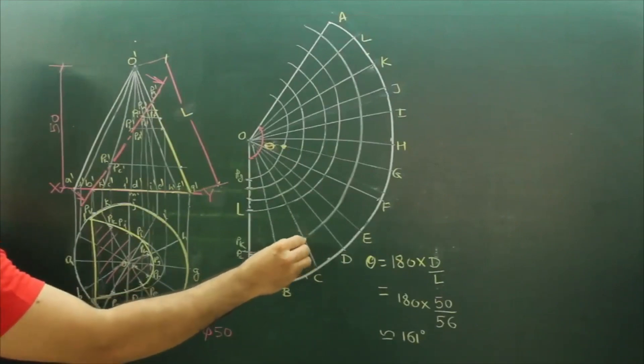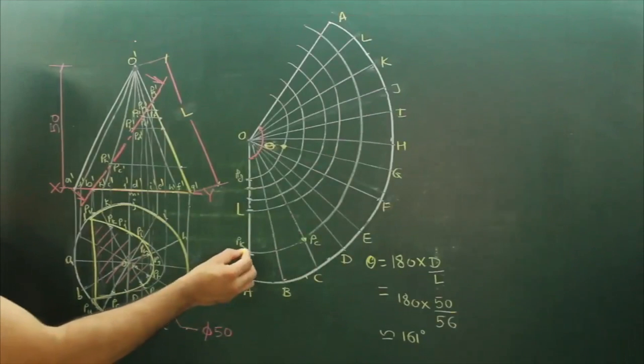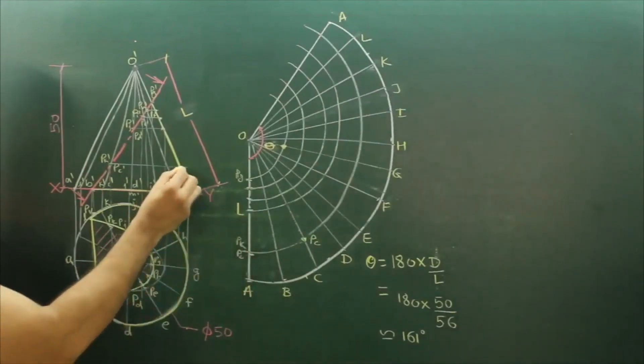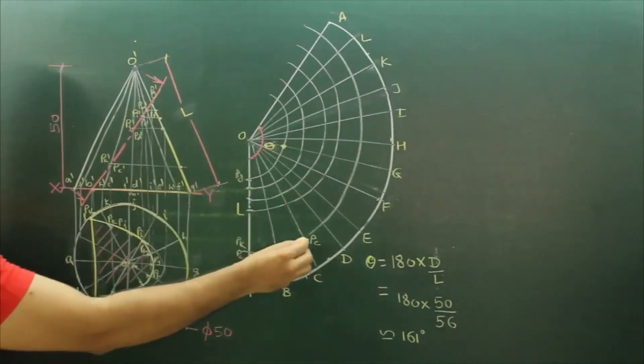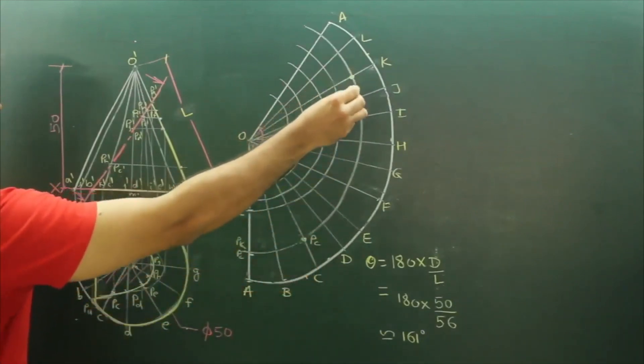So PC will come here, and PK will come up. It's here, right? C is here on C, and on K you will get PK.